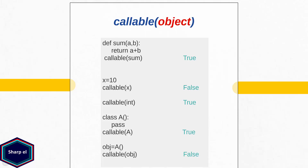In my first example, I am checking whether my function sum is a callable object or not. Because a function is a callable object in Python, the callable function returns boolean true. In my next example, I am checking whether integer object 10 is a callable object or not. Because an instance of a class is not a callable object in Python, callable function returns boolean false. Whereas the integer class itself is a callable object.